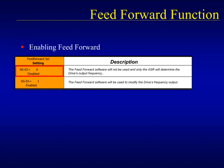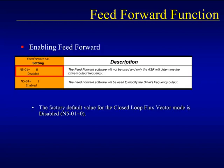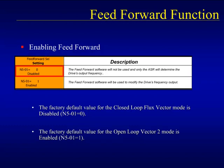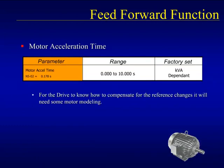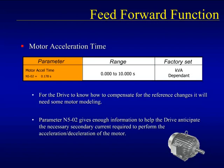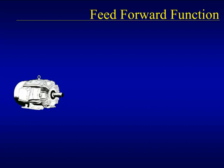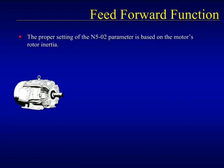The first step to using the feed forward function is to enable it. Parameter N5-01 will turn the feed forward circuitry on and off. If the drive is configured as a closed loop flux vector controller, then the default setting of the feed forward function is off. If the drive is configured for the open loop vector 2 control mode, the default setting of the feed forward function is on. Feed forward is not available in the other drive control modes, including the open loop vector 1 mode. The key to effective feed forward use is to accurately program information about the motor into the drive. The setting of parameter N5-02 is necessary for the feed forward function to compensate for the torque necessary to accelerate the motor's rotor inertia. N5-02 is set in terms of acceleration time and is based on the inertia presented by the motor's physical components such as the shaft and rotor.